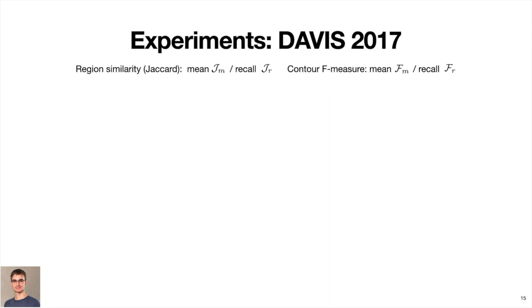We tested our approach by training on a number of commonly used video datasets and compared to previous work that used the same dataset for training. As evaluation metrics, we used the standard Jaccard index for region similarity and the F measure for contour quality.